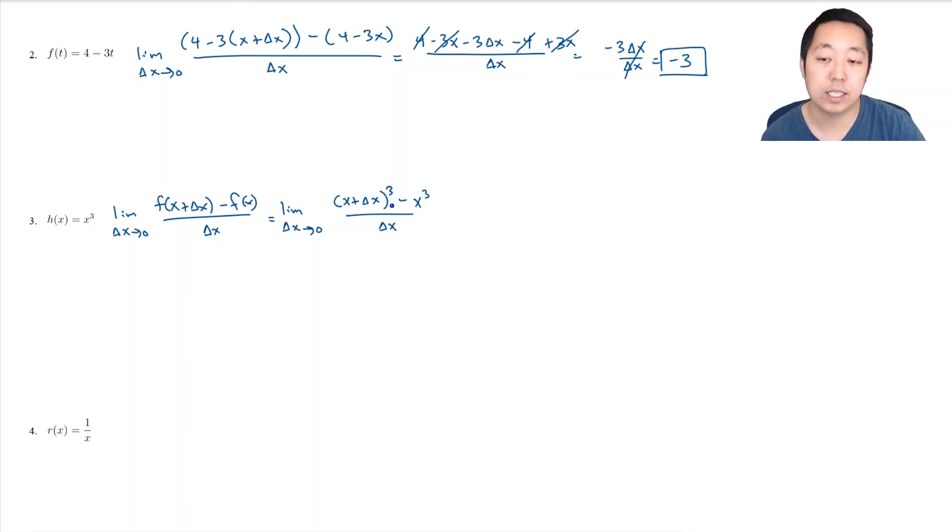And again, when I plug in delta x to zero, I'm going to get zero over zero. So what I have to do here is I have to do an expansion of this. And hopefully you remember your expansions. You can do this by hand, or if you remember your Pascal's triangle or whatever techniques you like to use, it's going to be x cubed plus 3x squared delta x plus 3x delta x squared plus delta x cubed minus x cubed. So I just simply did an expansion of this term here.